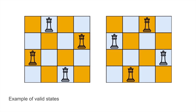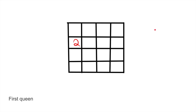So how do we construct a valid state? We build up from previous states. Starting from a blank N-by-N board with no queen present, we can put our first queen wherever we want. Then where can we place the second queen? Our choices are now limited — our candidate states are limited — because the entire column, row, and two diagonals of the first queen are unavailable.